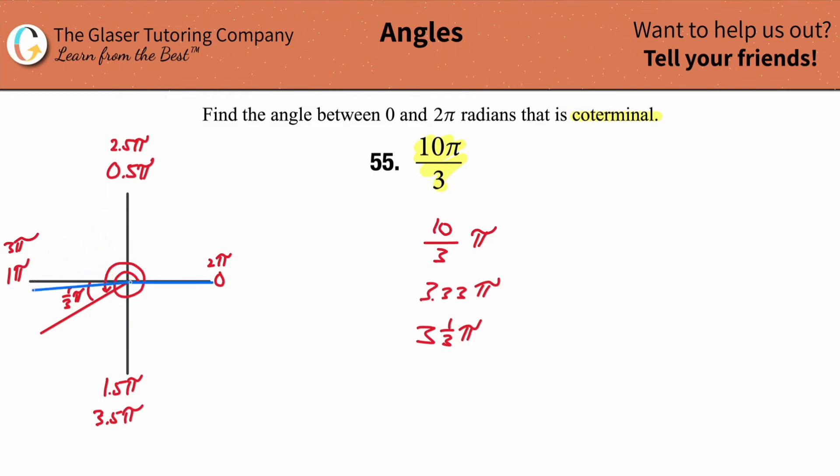And you're going to have it end up in the same place. That's what it means to be coterminal. Co means together, terminal means at the end. So we have the same endpoint for both of these angles.